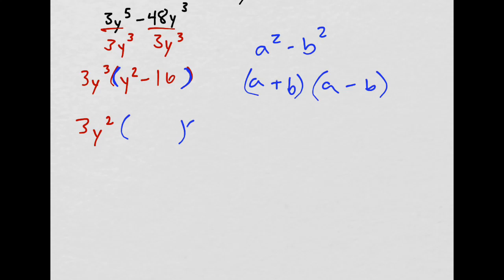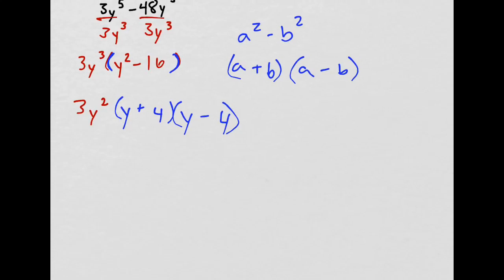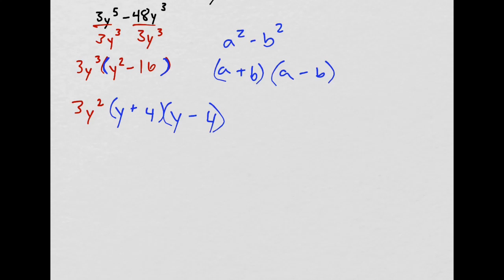I'll have my two parentheses, and I'll take the square roots. So I get square root of y squared, that's just y, and I put it in both front positions. Square root of 16, that's 4, and I put it in the second positions. And then I put a plus in one of them and a minus in the other.